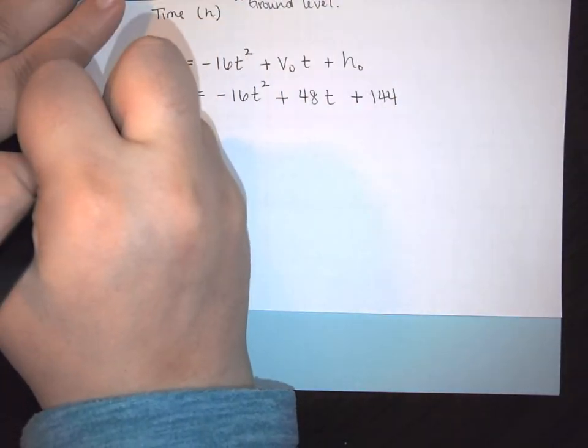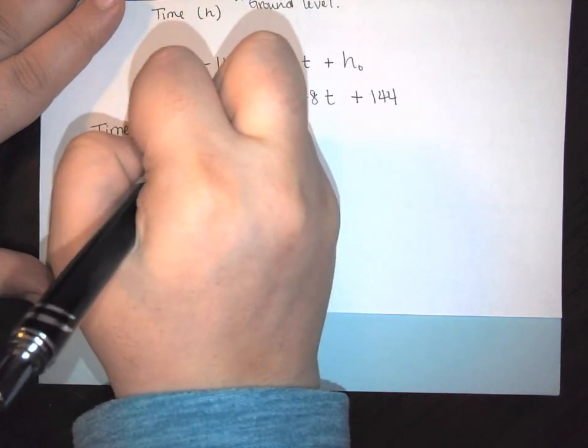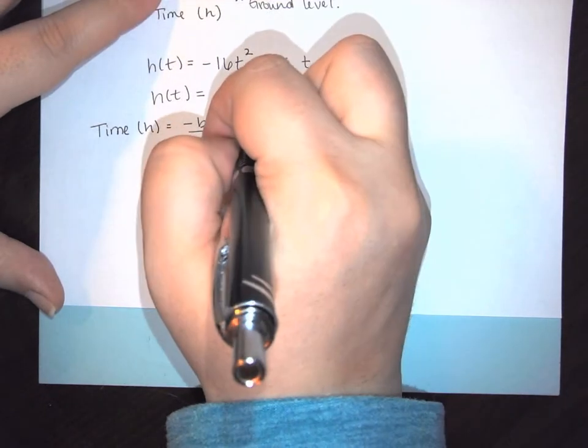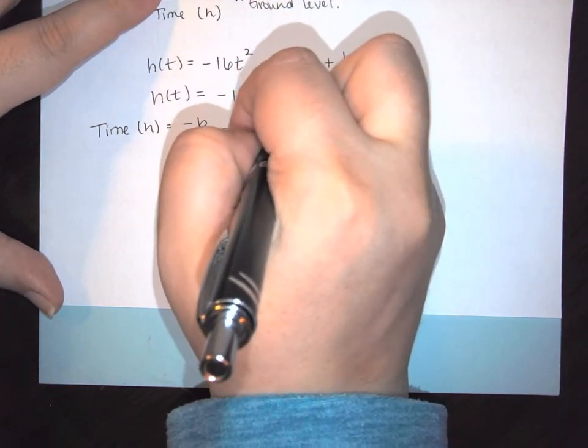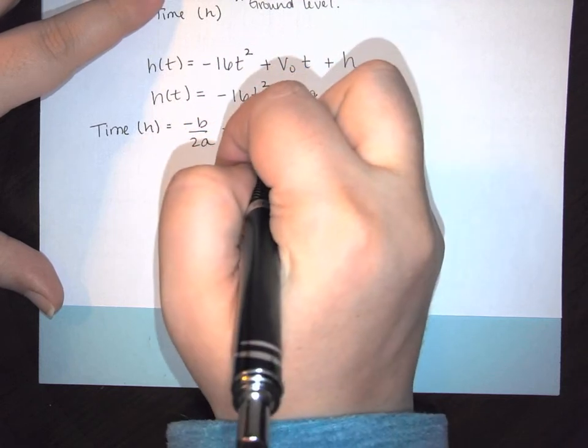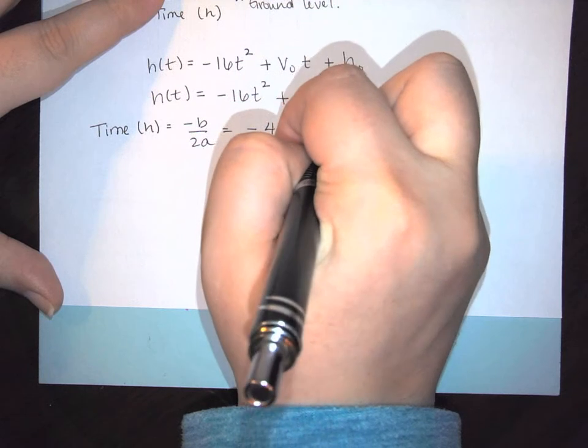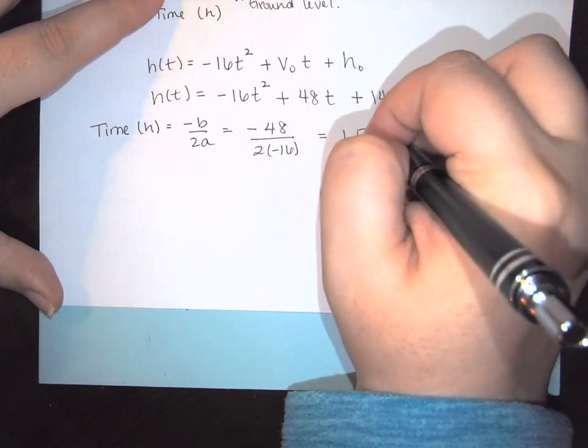So once you know all of that we can very simply find our time by using negative b over 2a. So here we're going to have negative 48 over 2 times negative 16, which is going to give us 1.5 seconds.